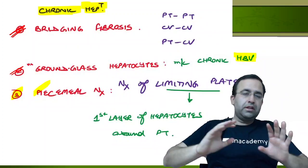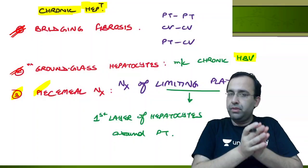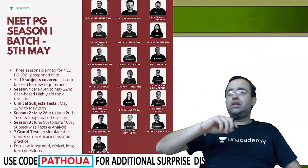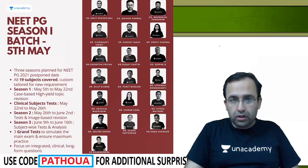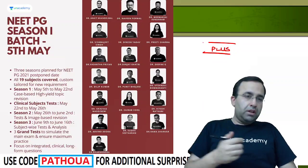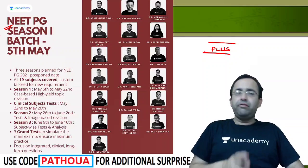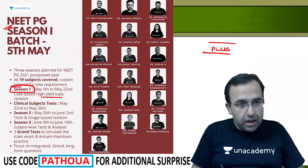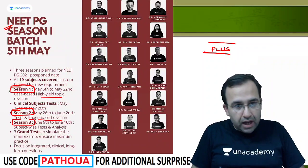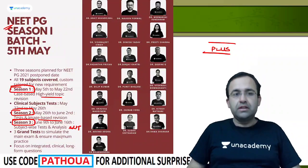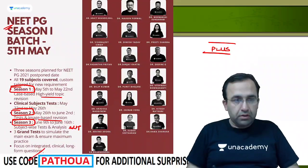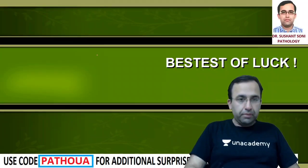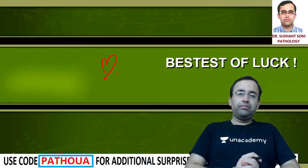So this was a short session to show you the microscopic images and the integrated clinical-based question on acute and chronic hepatitis. For numerous such sessions and questions, check the plus subscription of the Unacademy app. We are starting NeatPG Season 1 — the first batch started from 5th May — divided into three seasons: 5th to 22nd May for high-yield topics, followed by test and image-based divisions, and finally subject-wise tests and analysis sessions. You can use the code PATHOUA for maximum discounts. Take care and best of luck for the exam.